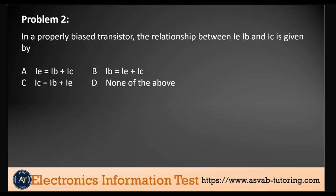Problem number two. In a properly biased transistor, the relationship between LE, LB, and LC is given by... We just have to choose the right one. The answer here is LE equals LB plus LC.